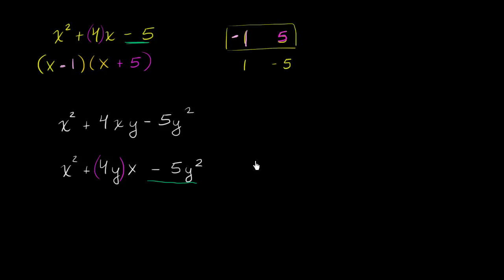One option would be positive y and -5y. y times -5y would be -5y², but if I add y to -5y, I get -4y, so this doesn't work.